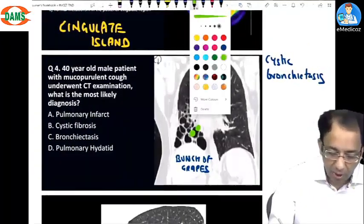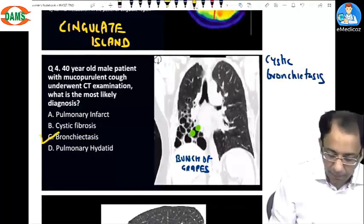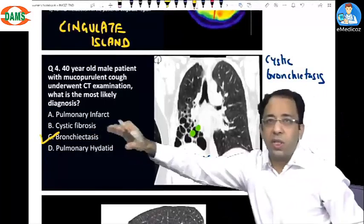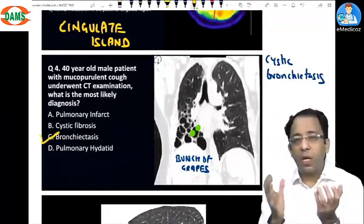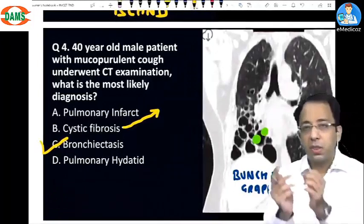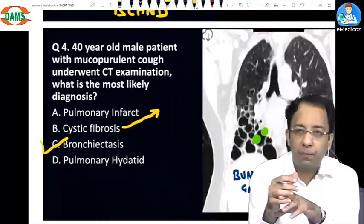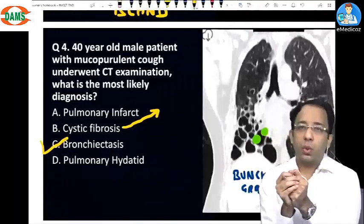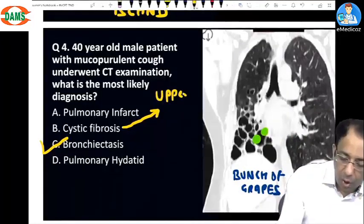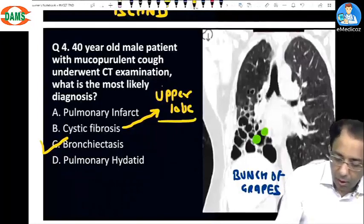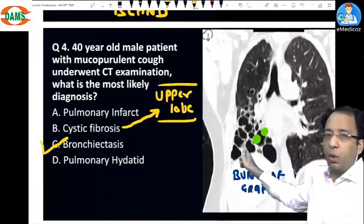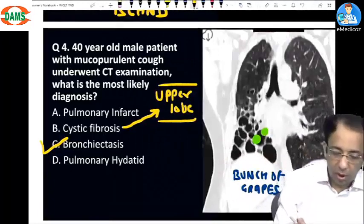This patient has bronchiectasis involving the right lower lobe. Some of you might wonder: why is this not cystic fibrosis? Even in cystic fibrosis you will have bronchiectasis, but cystic fibrosis is an autosomal recessive disorder leading to thick tenacious mucus causing upper lobe predominant bronchiectasis. This case shows lower lobe predominance, so we can rule out cystic fibrosis.